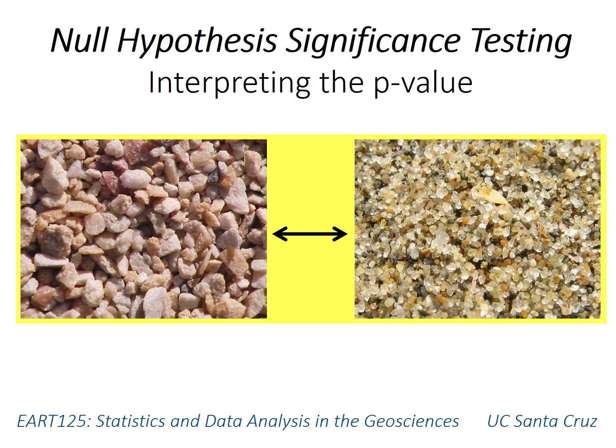The previous video discussed the procedure for choosing a statistical test, given the data that you have, the number of samples, and the number of variables. It also discussed how to frame a null hypothesis to be tested. So now we'll cover the interpretation of the results, in particular something called the p-value.